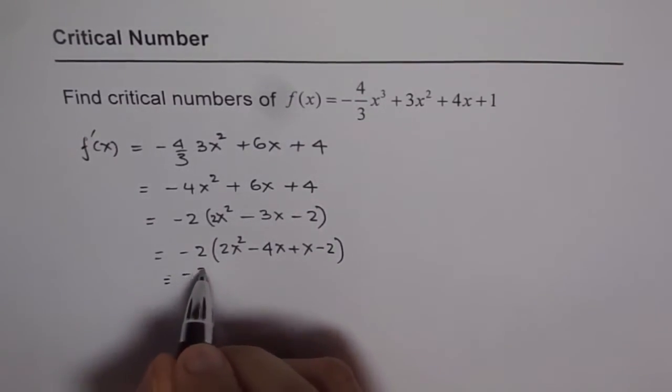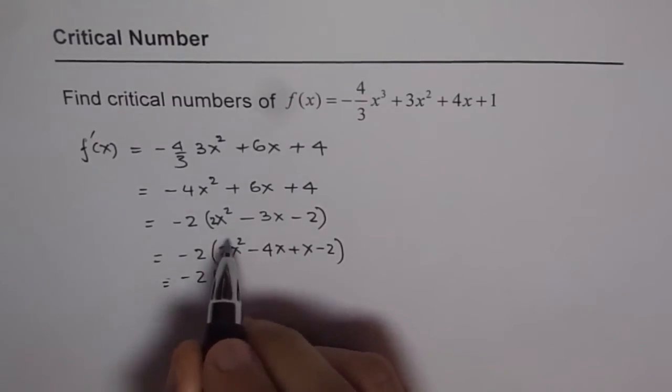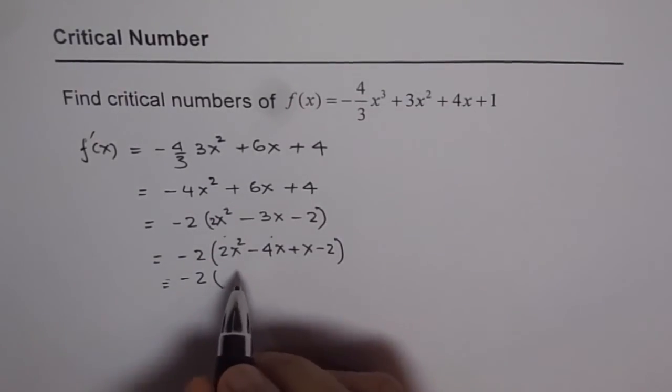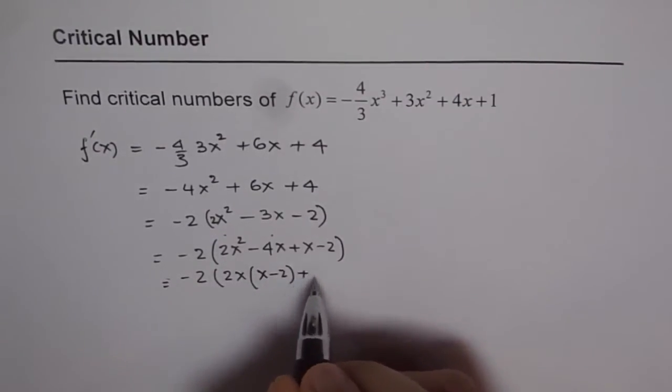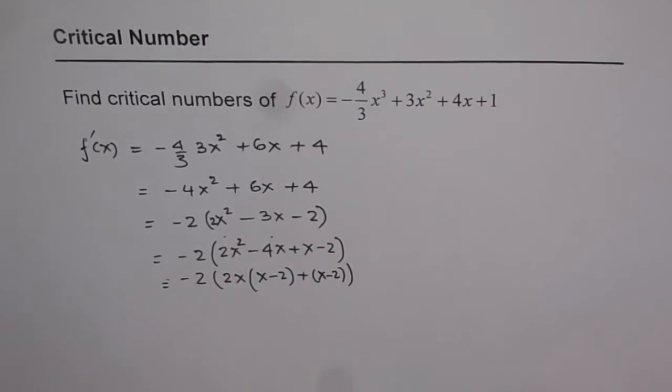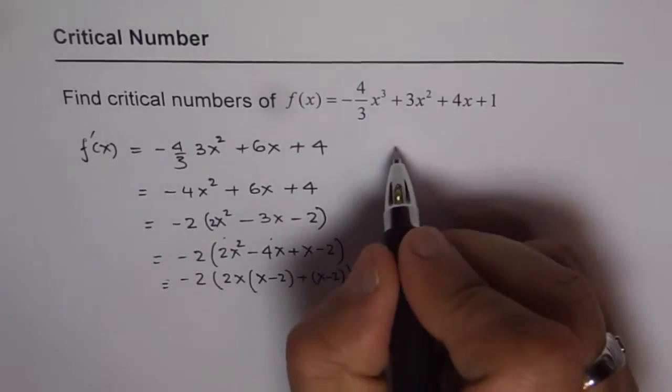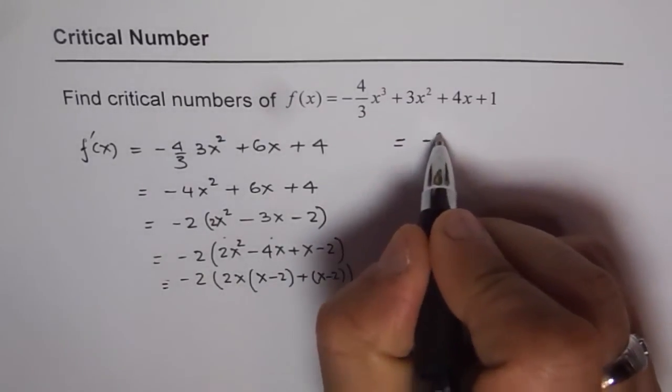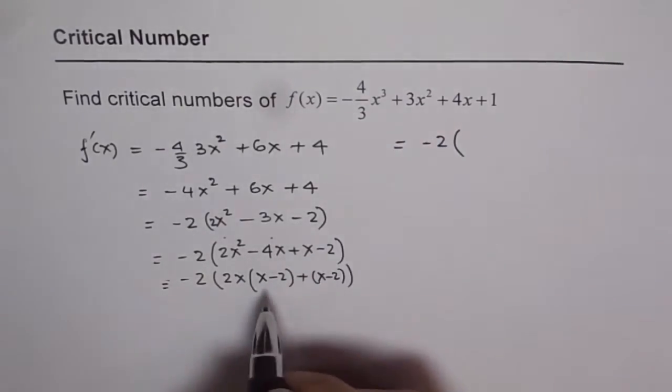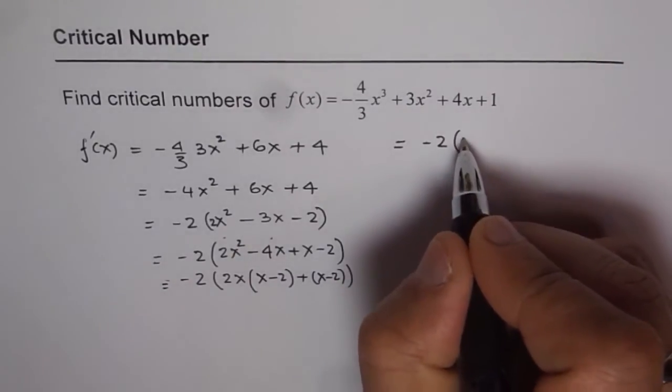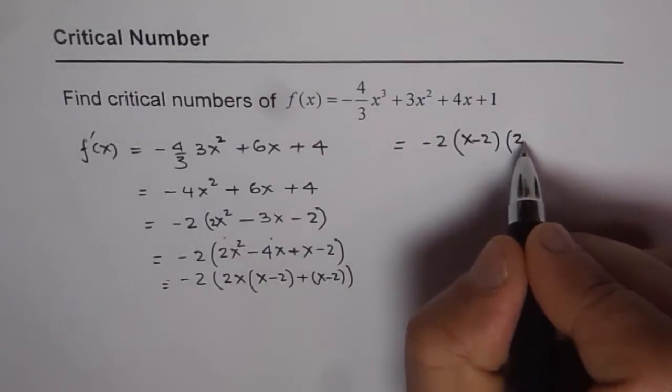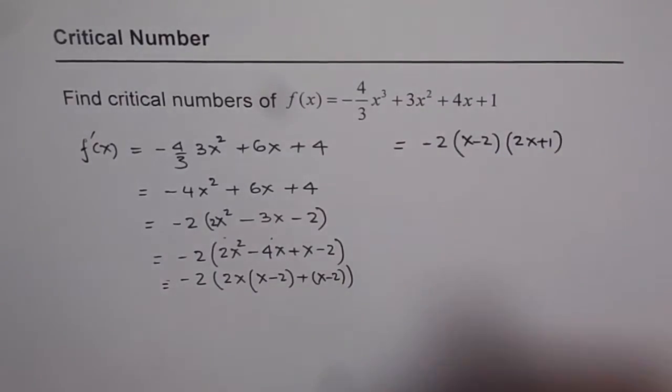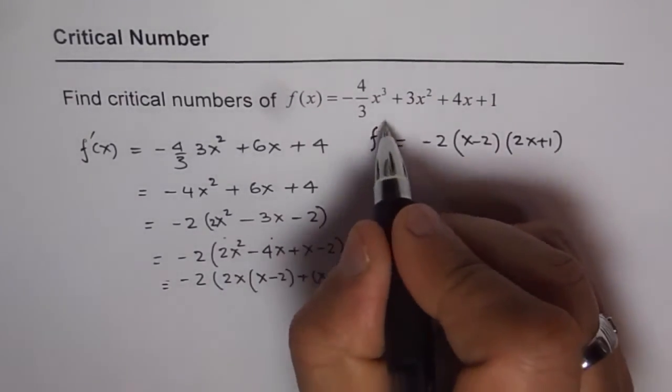That is -2 times... we can combine these two terms and factor out 2x, getting 2x(x - 2). We have x - 2 already. We can write this as -2(x - 2)(2x + 1). So that is the factored form of f'(x).